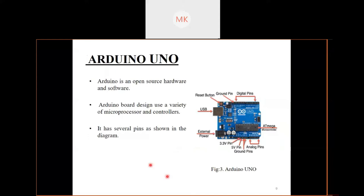Other components such as the servo motor and ultrasonic sensor are connected to these 14 digital pins. Out of those 14 digital pins, six are PWM output pins. Arduino Uno also has six analog input pins, a USB connection, and a power jack. The power pins are 3.3 volt, 5 volt, and ground, which supply power to the input-output components.